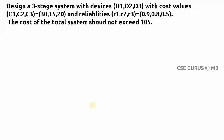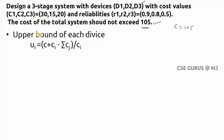The example problem: design a three-stage system with three devices, where each device's cost and reliability are given. The total system cost must not exceed 105. First, find the upper bound u_i for each device — meaning the maximum number of copies of each device we can consider.